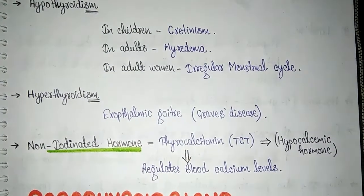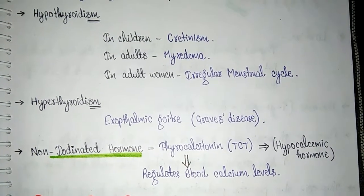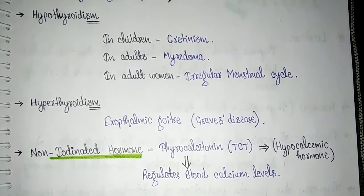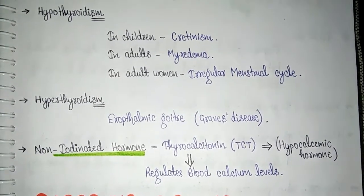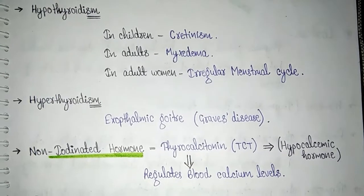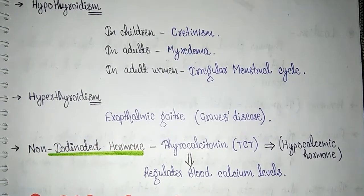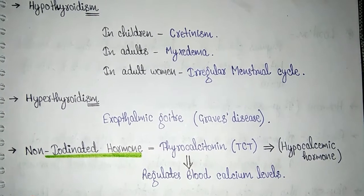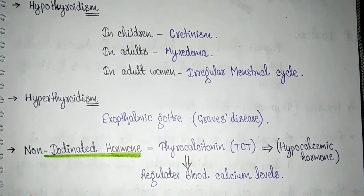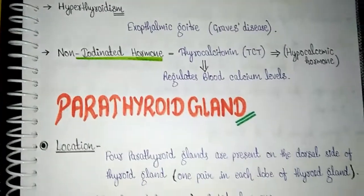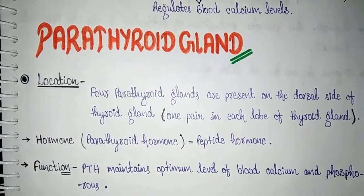The thyroid gland also secretes another hormone called thyrocalcitonin (TCT). Iodine is not necessary for its synthesis. Thyrocalcitonin regulates blood calcium levels and is also called a hypocalcemic hormone, as it lowers blood calcium levels.